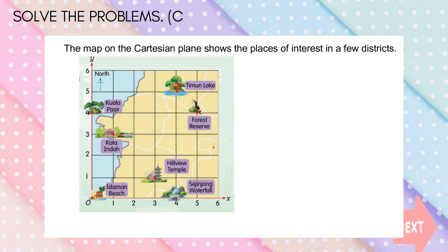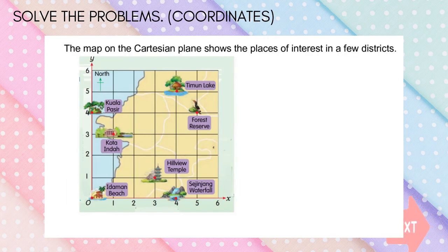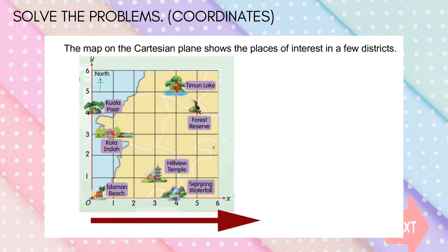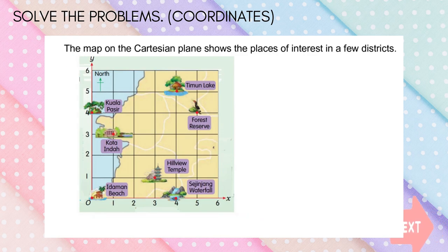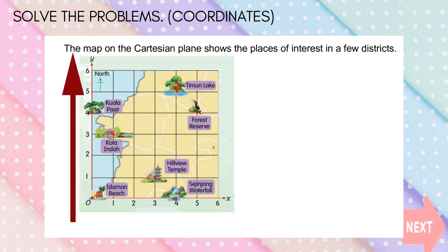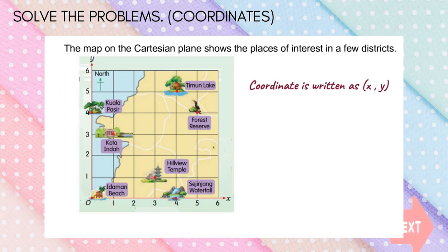Look at this map on a Cartesian plane. It shows the places of interest in a few districts. The horizontal axis here is the X axis, and the vertical axis here is the Y axis. To write a coordinate, write the coordinate of the X axis followed by the Y axis.